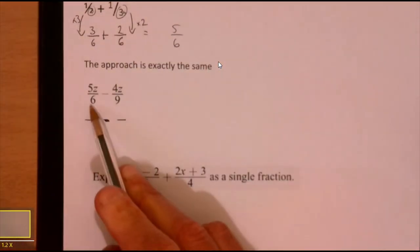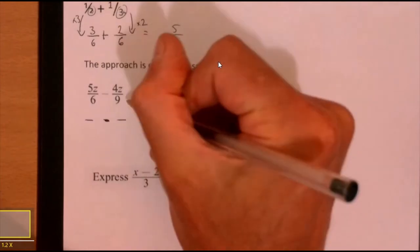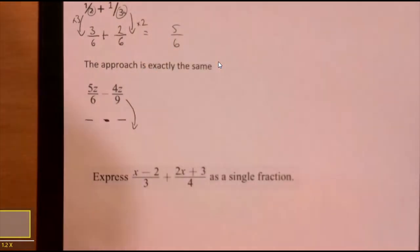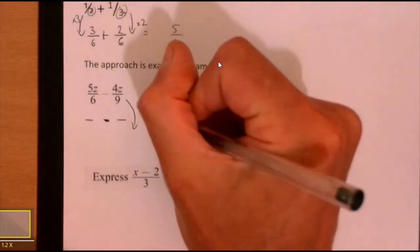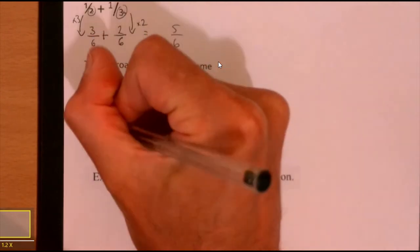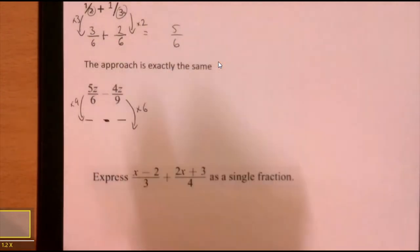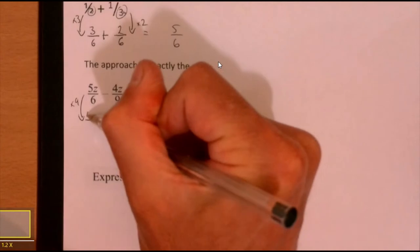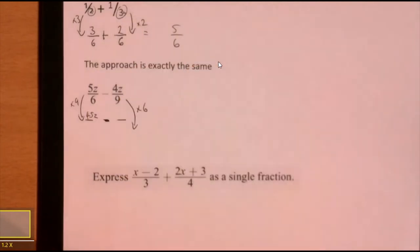So what I'm going to look for here is, okay, it's a subtraction, it doesn't really make any difference. I'm looking for my lowest common multiple. Well, I'm not actually going to go for lowest common multiple because I'm going to do exactly what I did a second ago. I'm going to multiply top and bottom by 6 and I'm going to multiply top and bottom by 9.